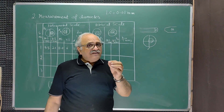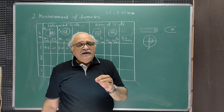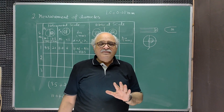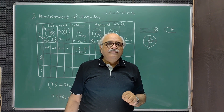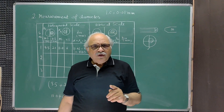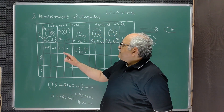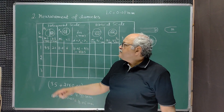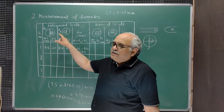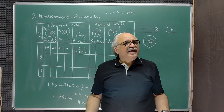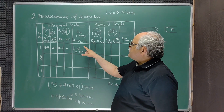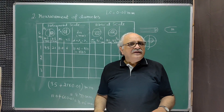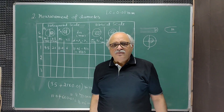Notice that I have not calculated the zero error in this measurement. There is no need for it, because if there is some error in the measurement of x1, that same error will be present in x2. Since we are taking the difference of the two, the zero error cancels out, so there is no need to find the zero error in this type of measurement.